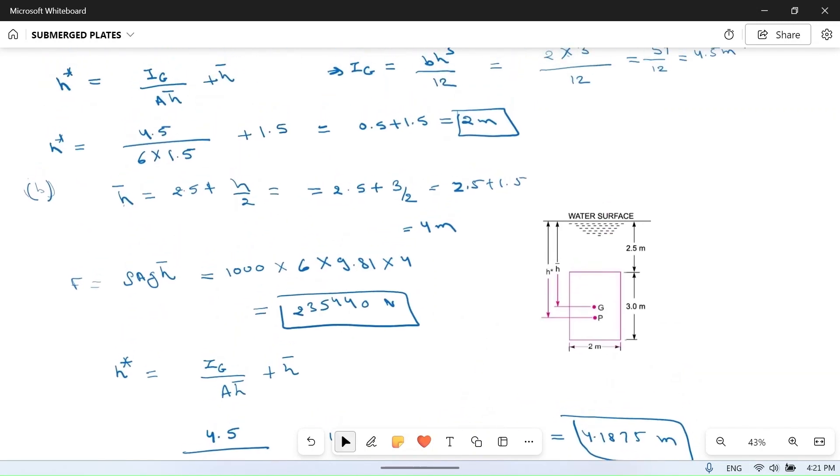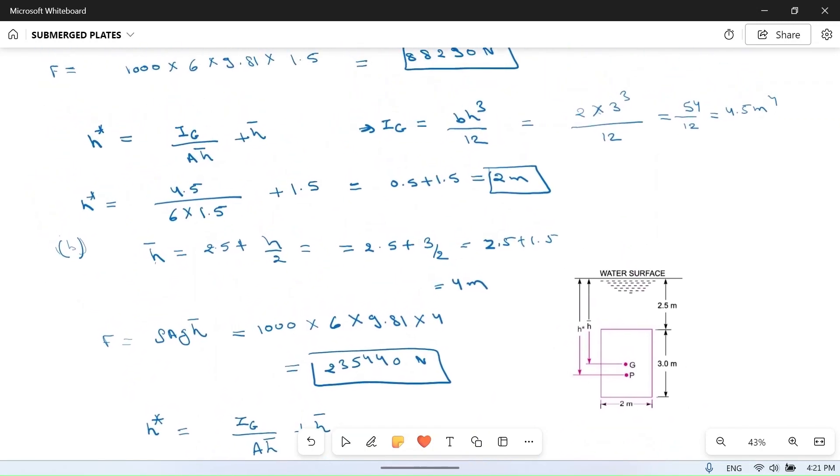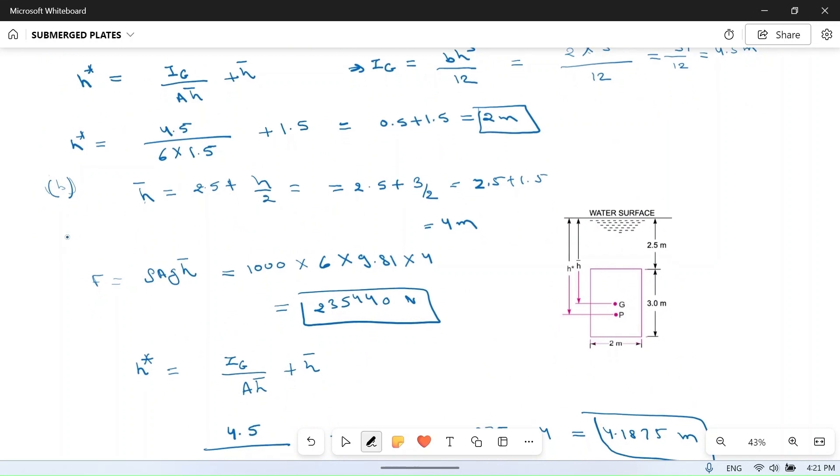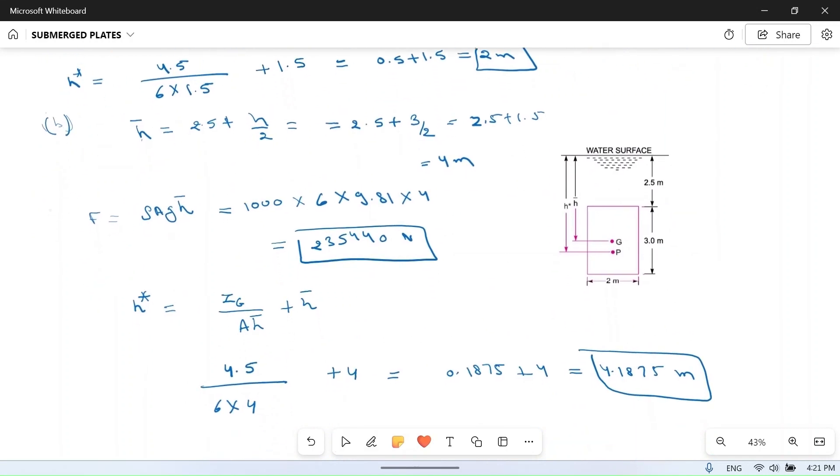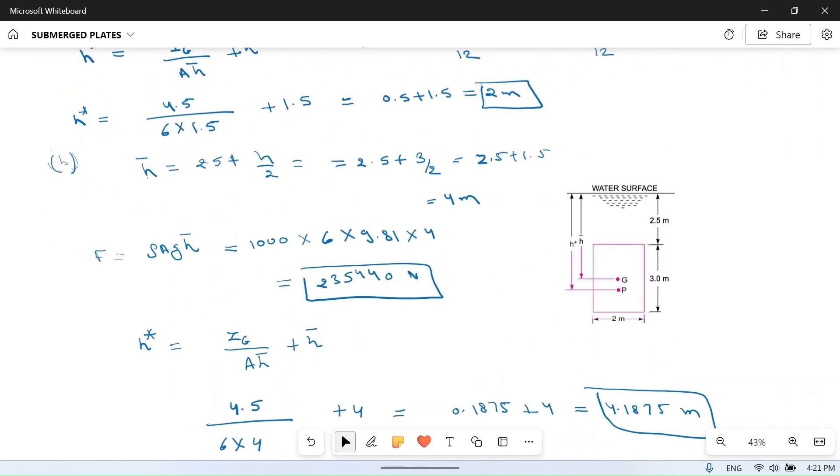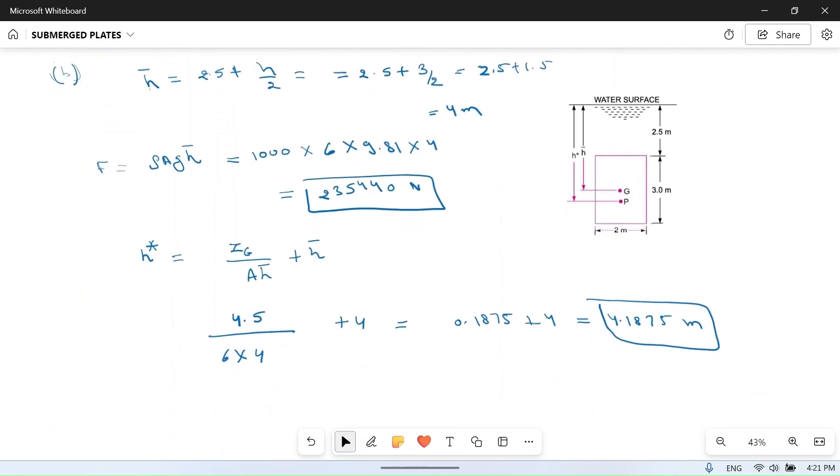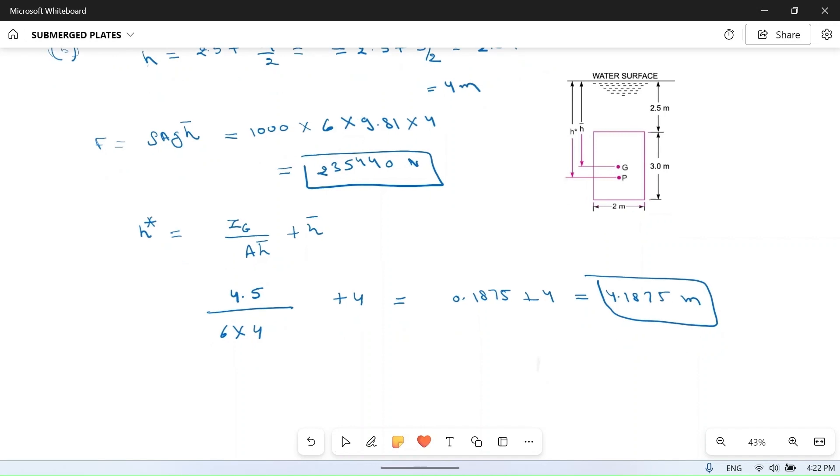And in initial case it was 2 meters and now it is 4.1875. So you can observe that as you go deeper in the water, the difference between h* and h̄ becomes less, means center of gravity and center of pressure they come closer as you go deeper in the depth. So I hope you understand this question.